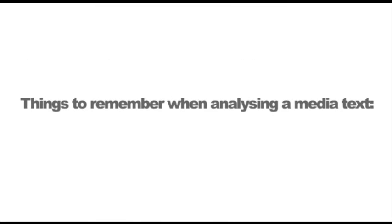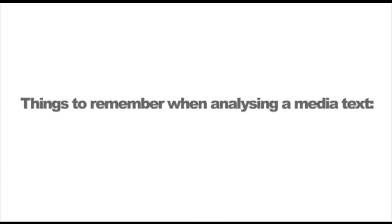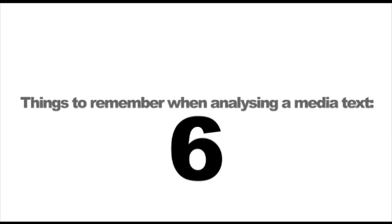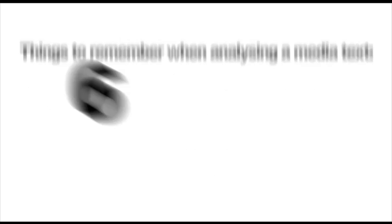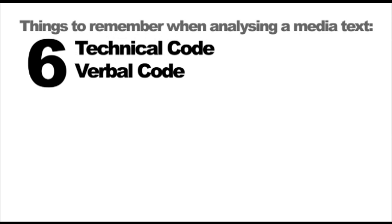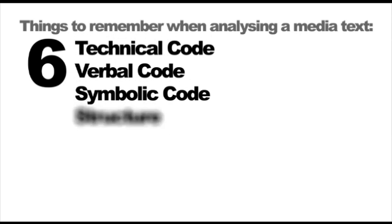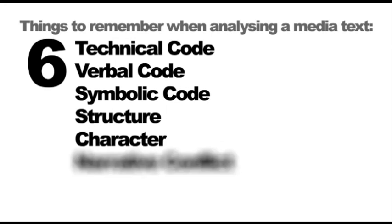So remember, when studying narrative, you are looking at how the story is told through six different means: technical code, verbal code, symbolic code, structure, character, and narrative conflict. Happy analysing.